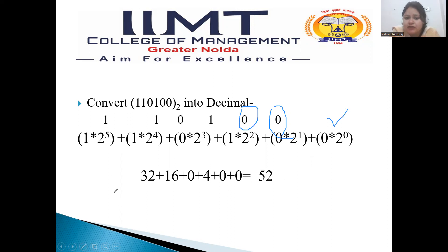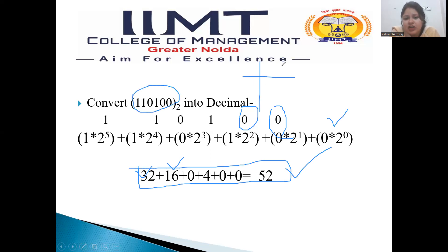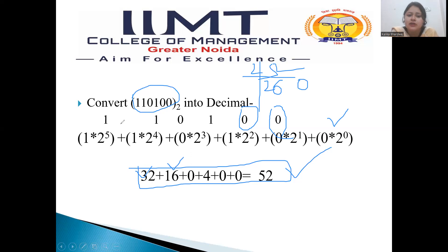So 2's power 5 is 32, 2's power 4 is 16. Multiplying 0 into 2's power 3 (which is 8) gives 0. Then 2's power 2 is 4, then 0, then 0. When we add all these digits, we get 52. This was the same number we converted to binary in the first slide, so you can verify your work this way.